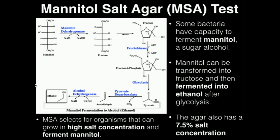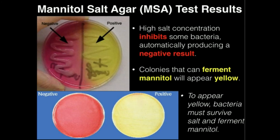Here's the biochemical basis of this. This agar contains a phenol red pH indicator. High salt concentration inhibits some bacterial growth, and if growth is inhibited, that automatically produces a negative result. In the case of MSA, a negative result appears red, as seen on the left in both the top and bottom figures. Colonies that can ferment mannitol will appear yellow, as seen on the right side of the plate — that is a positive MSA result.